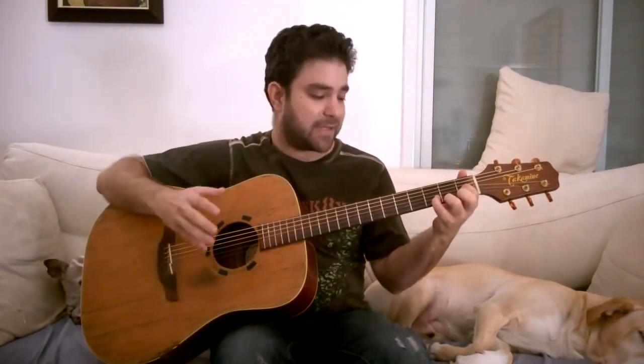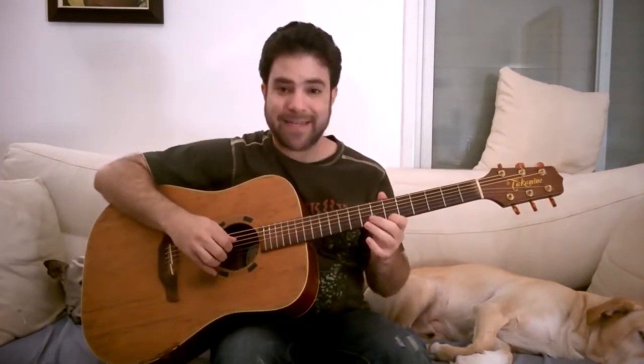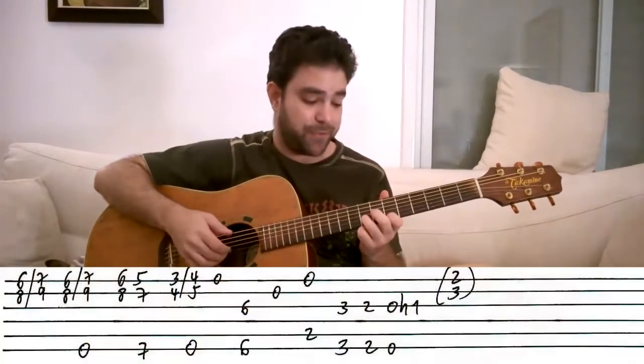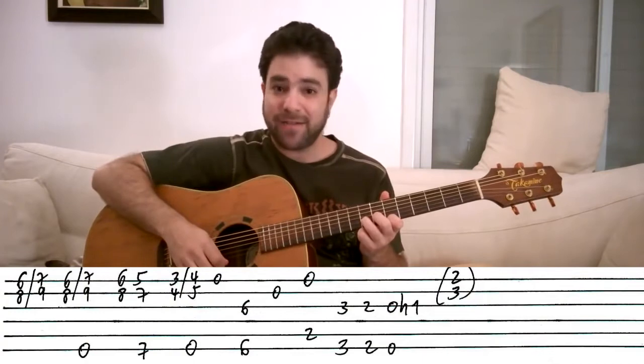So this has a walking bass line with kind of a chord progression in there. You start with 6 and 8 on strings 1 and 2, and you slide it twice from 6 to 8 to 7 and 9.